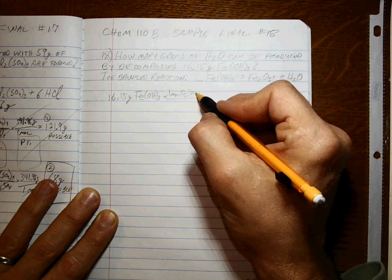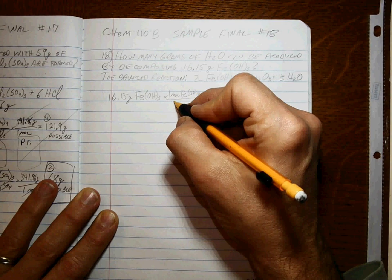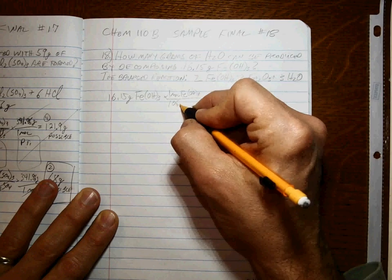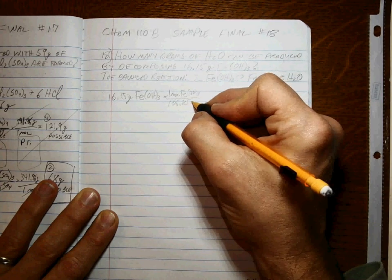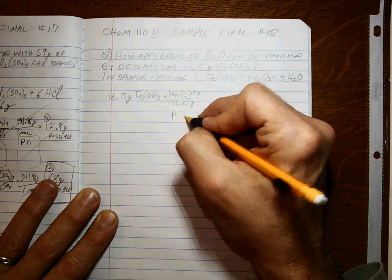Three oxygens, three hydrogens, and one iron. It weighs a total of 106.85 grams. This is a periodic table step.